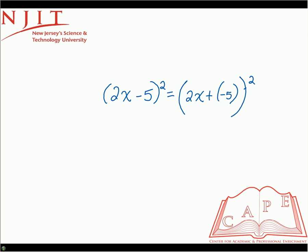So it's going to be first term squared, so it's (2x) squared, plus 2 times each of the terms, so it's 2 times 2x times (-5), right? Because the second term is minus 5. And then finally the second term squared, which is (-5) squared.